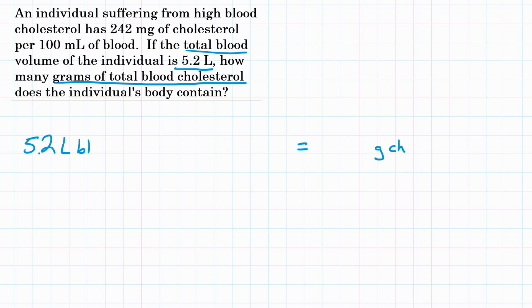So before we start our dimensional analysis, let's see if the problem gives us anything valuable. We do see that 242 milligrams of cholesterol is in 100 milliliters of blood. So 242 milligrams of cholesterol equals 100 milliliters of blood. That may be of use in a little bit.